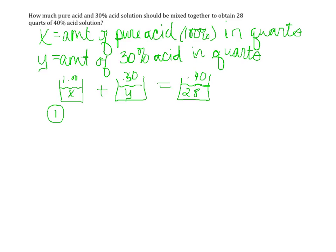Whether that's 8 and 20 or 10 and 18, we don't know yet. We know that this amount of quarts of pure acid plus the amount of 30% has to equal 28 quarts. Then we need to figure out the mixture part of it.